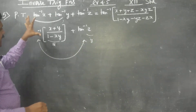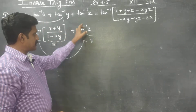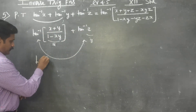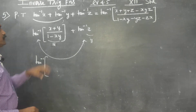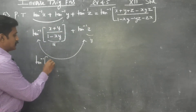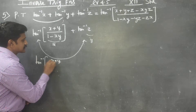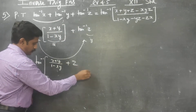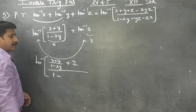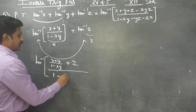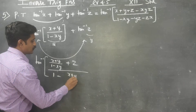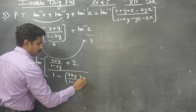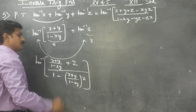Tan inverse of X plus tan inverse of Y — what is the formula? Tan inverse of (X plus Y) divided by (1 minus X times Y). So we get tan inverse of (x plus y) over (1 minus xy), all combined with tan inverse of z.